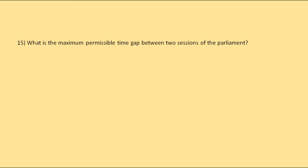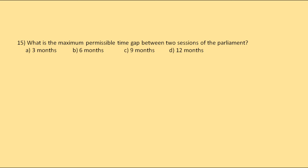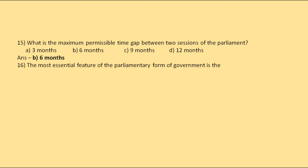What is the maximum permissible time gap between two sessions of the Parliament? The options are 3 months, 6 months, 9 months, or 12 months. The correct answer is 6 months.